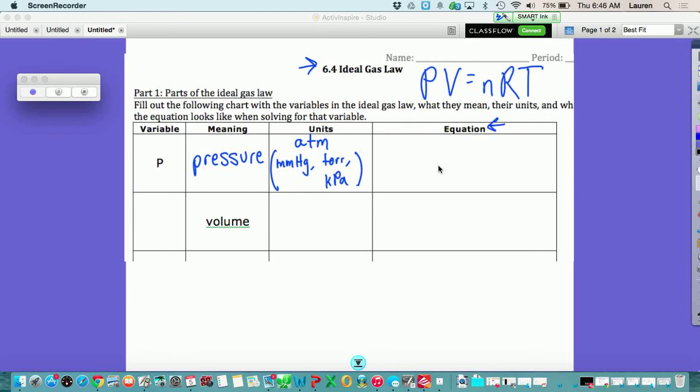This equation part right here means what would the main equation look like if we were solving for P. In this case, in order to get the P by itself, we have to move the V. Since it's multiplied here, it's going to be divided over here. So you end up with P equals nRT over V.